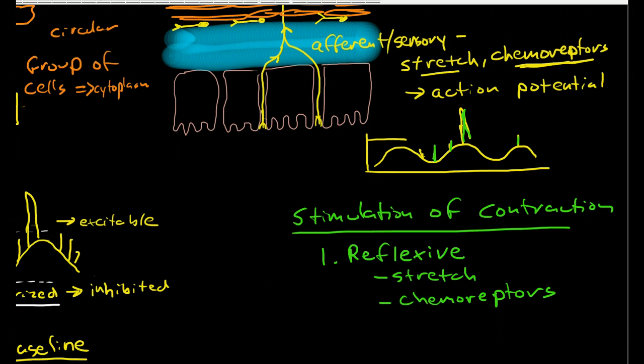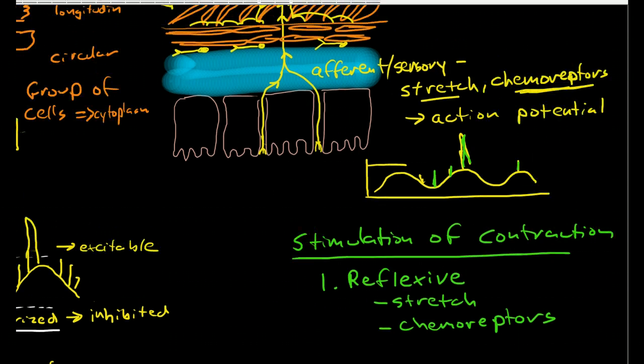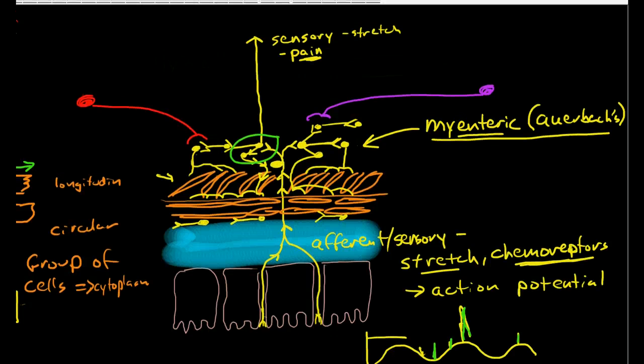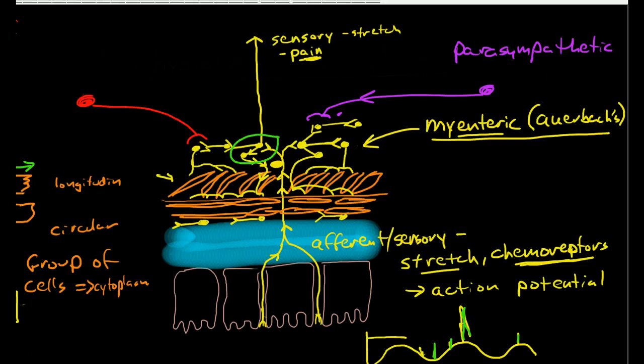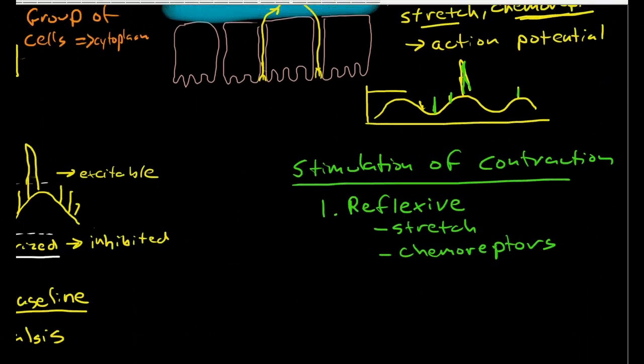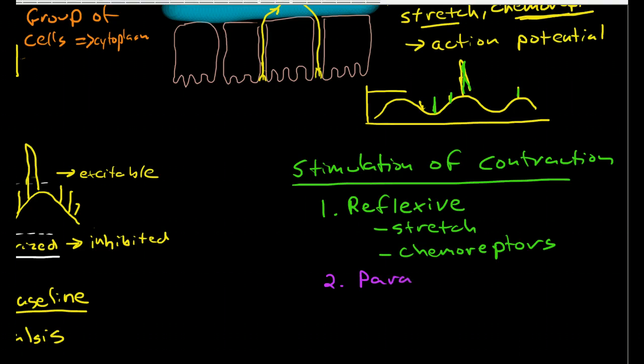Now the other thing that can stimulate an action potential is acetylcholine, and acetylcholine comes through the parasympathetic nerves. So it releases acetylcholine. Essentially this is parasympathetic stimulation.